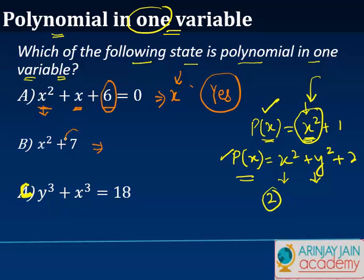The second one, 7 is fixed, only x squared is something which can vary. This following state of the polynomial is one variable. The answer is yes.